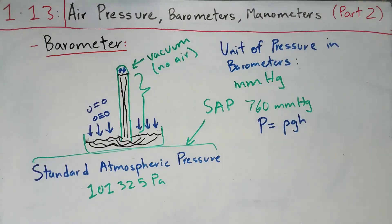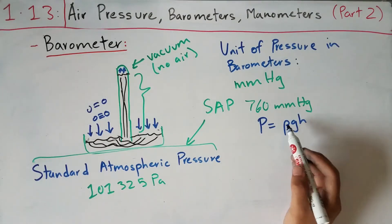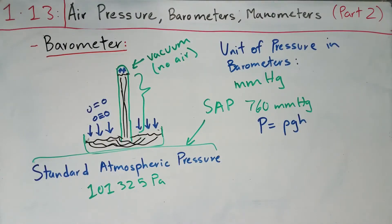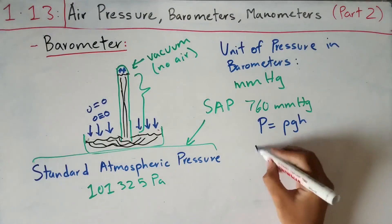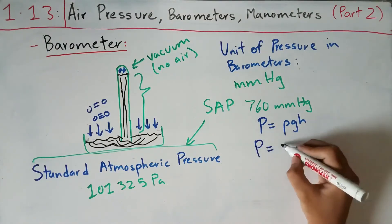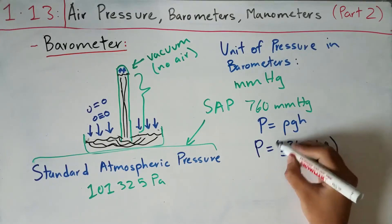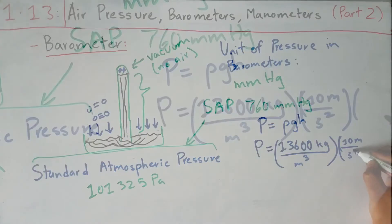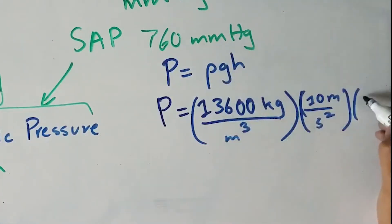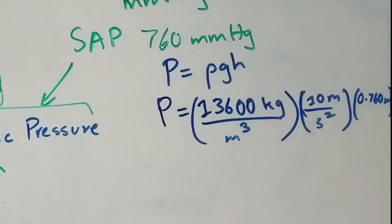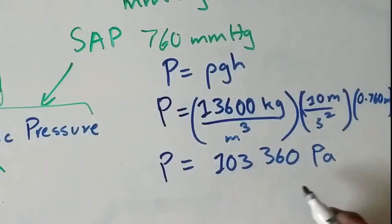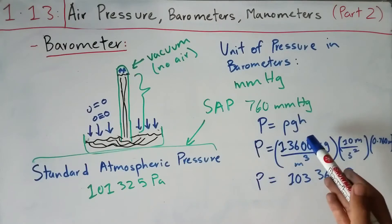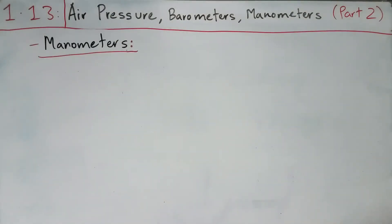Let's convert 760 mmHg to pascals. Pressure equals density times gravitational constant times height. The density of mercury is 13,600 kg/m³, gravity is 10 m/s², and the height is 760 mm, which equals 0.760 meters. Multiplying these: 13,600 × 10 × 0.760 = 103,360 pascals. This is very close to the standard value of 101,325 Pa, with the small difference being within acceptable uncertainty.